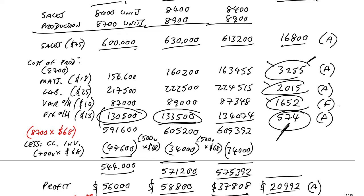Remember what we've done so far. We produced a full flexed budget and calculated the total variances. Then we went through the cost variances — first materials, labour and variable overheads, which should have made sense. And then in the last lecture, I went through fixed overheads, which I hope you're clear about, and obviously in practice a bit less obvious, a bit strange.